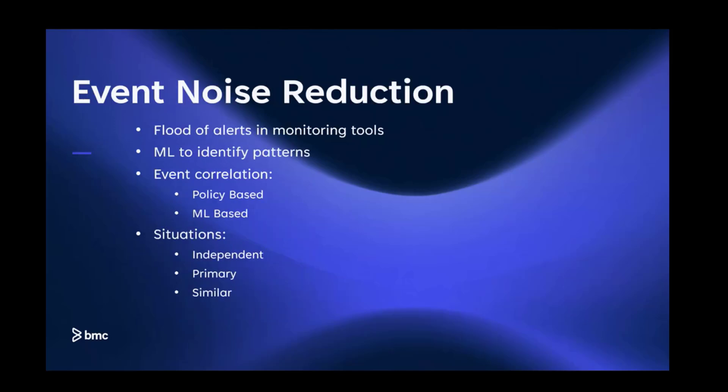Let's talk about event noise reduction. Event noise is a term to describe hundreds of thousands of daily notifications and alarms from monitoring tools which are being sent to our operations team. Event noise reduction involves applying machine learning on historical and real-time data to identify patterns and suppress events. The events from same or different hosts are correlated based on occurrence, message, signature, topology, or a combination of these factors.